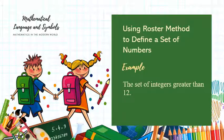Using roster method to define a set of numbers, example: the set of integers greater than 12. Simple: 13, 14, 15, 16, 17, 18, 19, and so on up to infinity. Let's see how it is written in the roster method. Roster method is just listing all the elements: {13, 14, 15, ...}. That means 'and so on.'